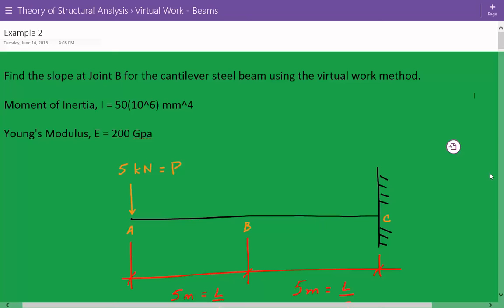Hey everybody, this is example number two for structural analysis of slopes and deflections for beams using the virtual work method. The problem statement is we're asked to find the slope at joint B for the cantilevered steel beam using the virtual work method. The moment of inertia I is equal to 50 times 10 to the 6 millimeters to the 4th power, and Young's modulus is equal to 200 gigapascals.